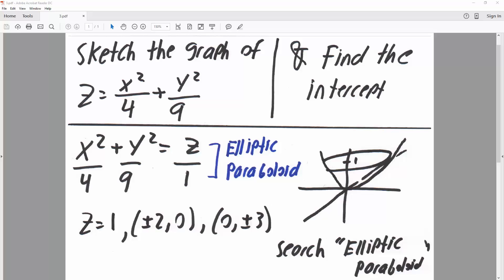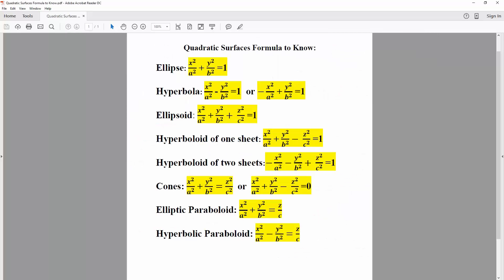So the first thing we want to know is what type of quadratic surface do we have. So I'm going to pull up the list of quadratic surfaces that we know and we want to know what one out of all of these is our problem. So let me go back to the problem.